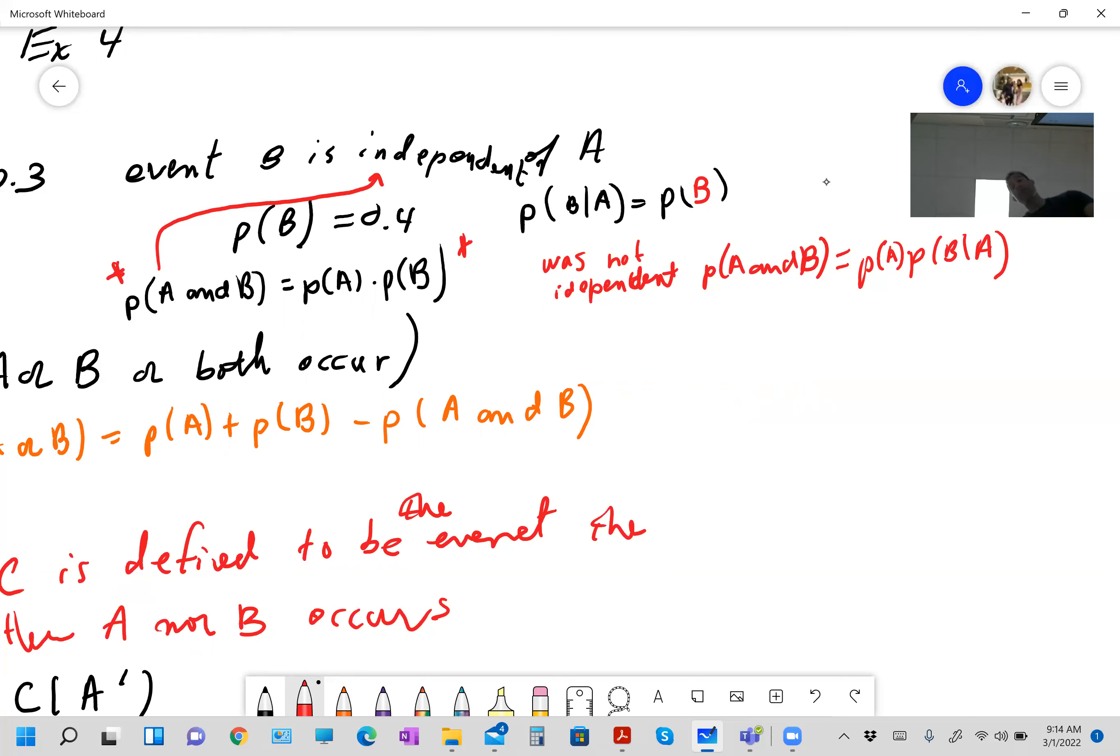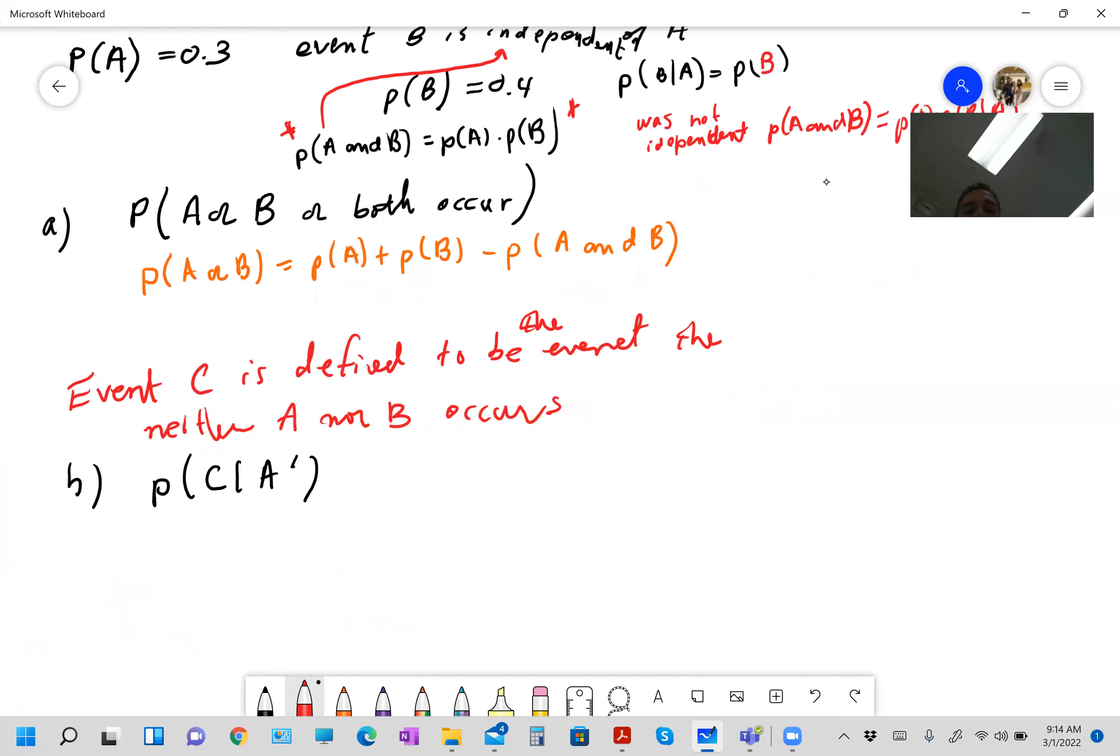Okay guys, you got to figure this out. A lot of you are not putting in the work that's necessary. Now, part B says event C is defined to be the event that neither A nor B occurs. So what does that mean? So a lot of us can interpret this as the probability, well, let's just say if A or B don't occur, so what does that mean?